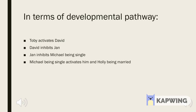Now that we know the characters' interactions with each other and how that relates to positive and negative transcription factors — in other words, activators and repressors — we can put it in terms that help develop a pathway. We can say that Toby activates David because he informs him of Jan's poor work, David inhibits Jan because he fires her, Jan inhibits Michael by being in a relationship with him, and Michael activates Holly by pursuing a romantic relationship with her. When Holly is activated, the outcome is the two of them getting married.